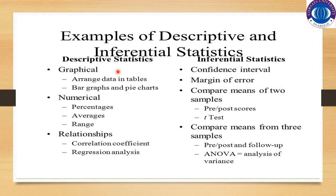Examples of descriptive statistics include graphical, numerical, and relationship-based methods like correlation and regression. Graphical representation arranges data in tables and uses different graphs such as bar charts, pie charts, and component bar charts. Numerical representation includes percentages, averages, range, correlation coefficients, and regression analysis, which we will learn more about in upcoming lectures.